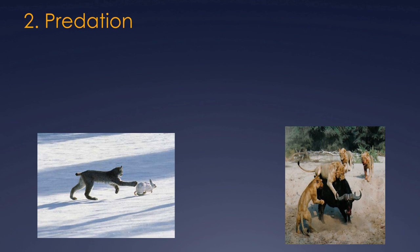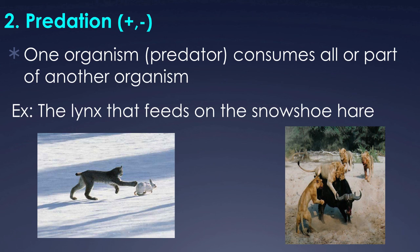The next interaction is predation. Predation is when one organism, the predator, eats all or part of another organism. It is positive for the one doing the eating and negative for the prey — so I represent it with a positive/negative sign. Examples include a lynx feeding on a snowshoe hare, lions eating prey, a snake eating a mouse, or a wolf eating a chicken. One animal benefits and the other is harmed.